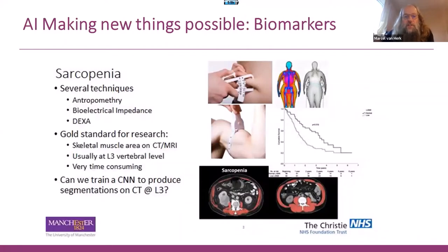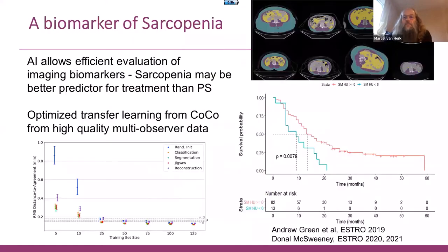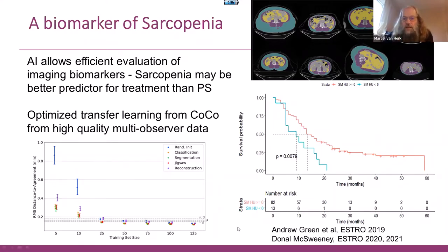AI can also make new things possible, such as biomarkers. A very good biomarker is for sarcopenia — muscle wastage — which is an indication of global health. If you're not healthy, you can't deal with cancer treatment very well, so we needed auto-segmentation of muscle compartments in CT scans. Donald McSweeney has shown that with optimized transfer learning, you can train networks with about 25 cases and get better performance than human observers for contouring these targets. Andrew Green has shown that survival in different cohorts is clearly related to the amount of sarcopenia measured this way. This biomarker of global health could complement or even replace qualitative markers like performance status.